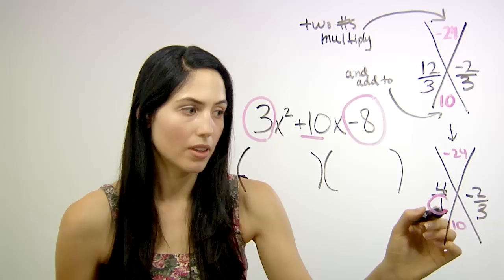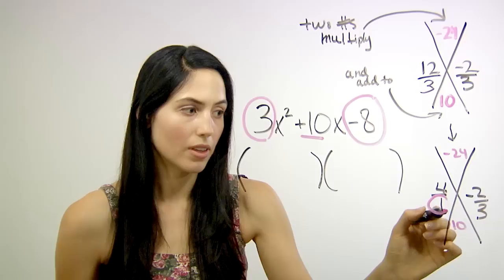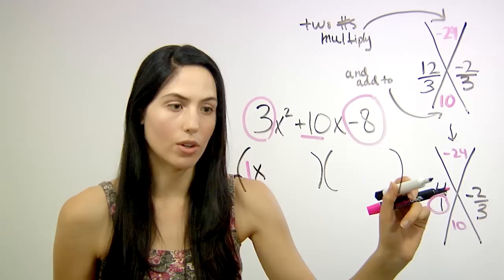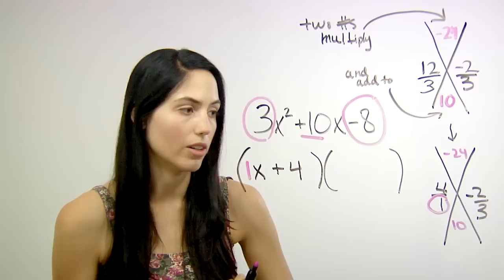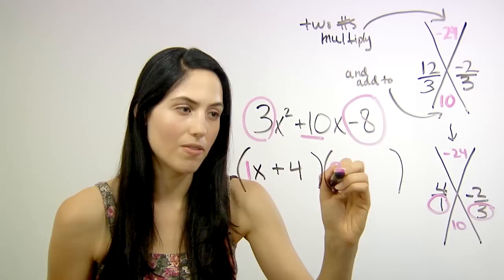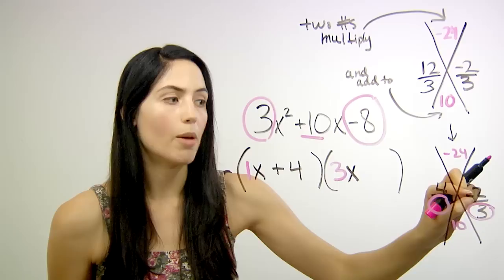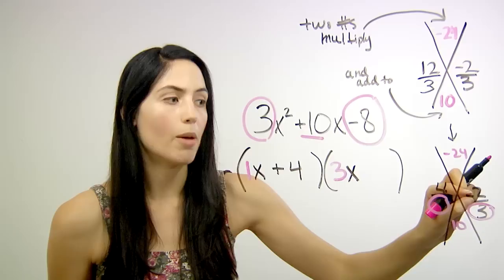The bottom number in this fraction gives you the coefficient of x. So we have 1x. The top number gives you your constant, so just plus 4. Same for the other term, the other factor. Your bottom number here, 3, gives you your coefficient of x. And the top number, negative 2, gives you your constant. And you're done.